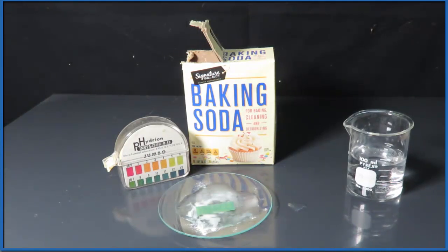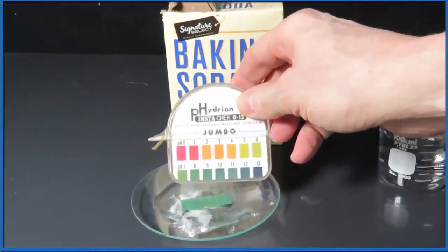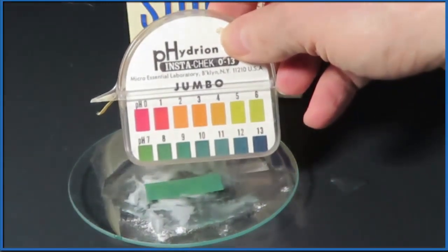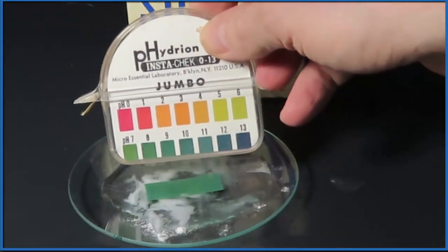And you can see right away the pH paper changes green. That green tells us that the pH is 7 or greater, and that means that we have a base.